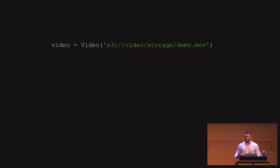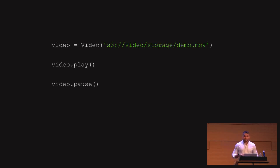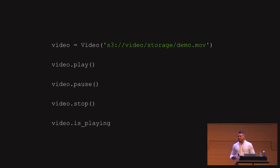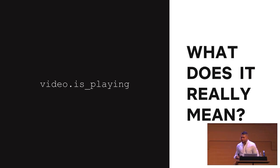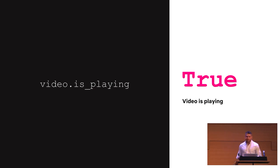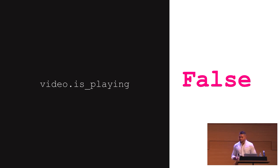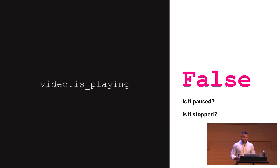So we can create a video instance, play the video, pause the video, stop the video, and check if the video is playing. But video.isPlaying — what does it really mean? When it's true, it definitely means the video is playing. But what happens when it's false? Is it paused? Or is it stopped? In reality, we don't have enough information to answer this question.